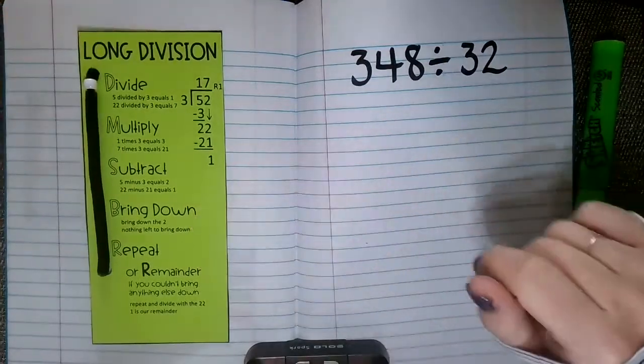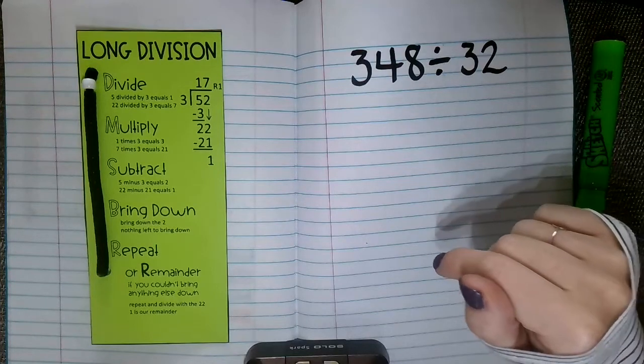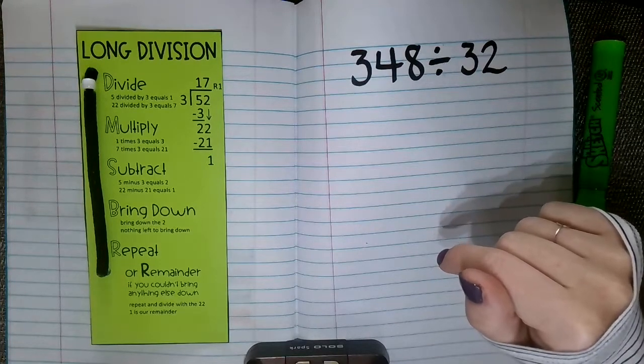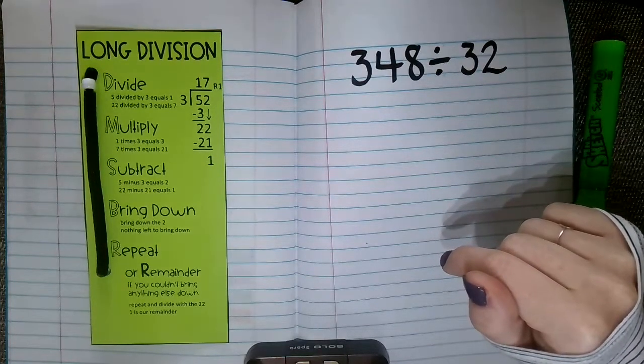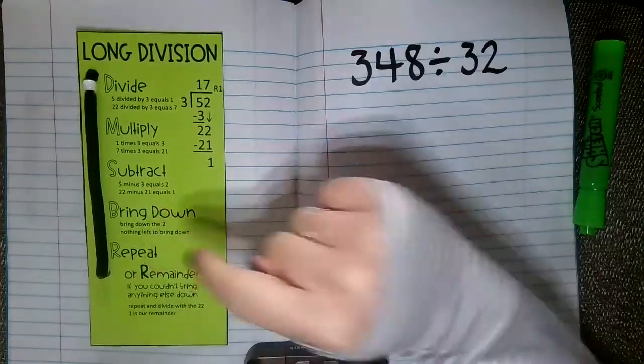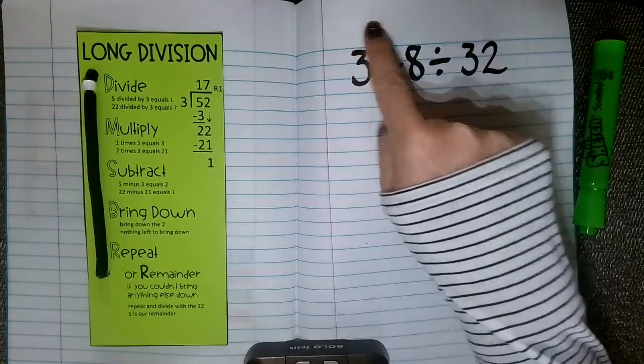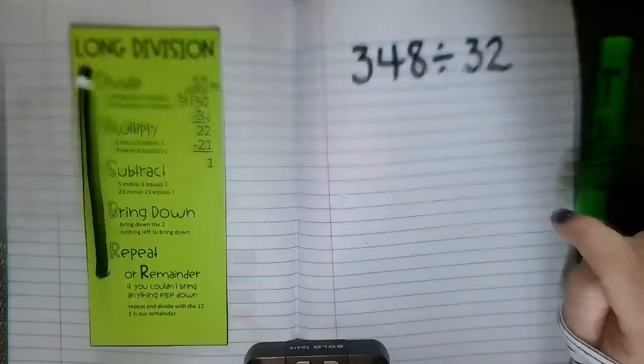You probably don't have one of these. So if you don't and you need to have the steps out in front of you, I know a lot of people use different little rhymes to help them remember it. I've heard dad, mom, sister, brother, rover, or maybe you have your own that your teacher has taught you. If that helps you and you want to write that along the top, that is totally fine.